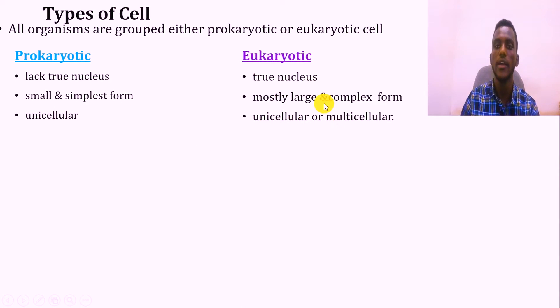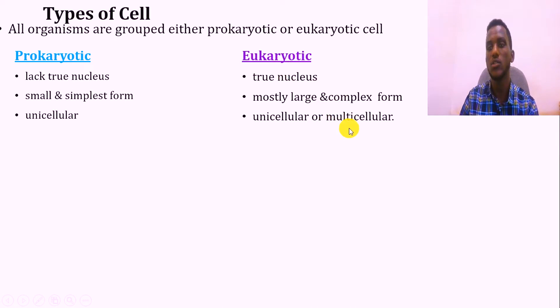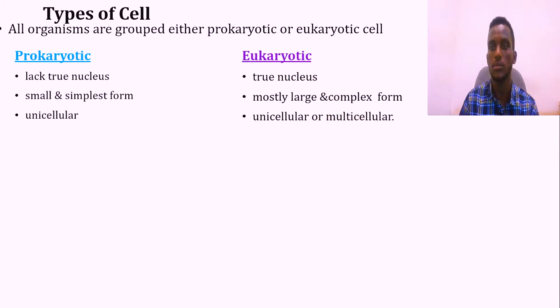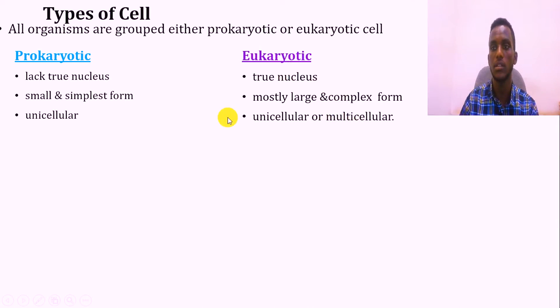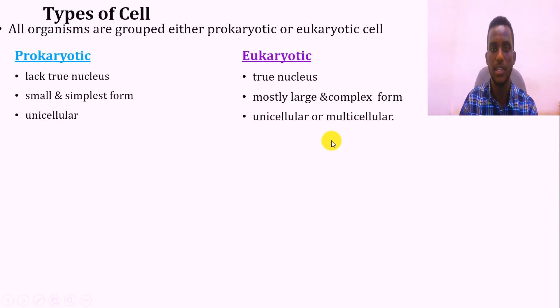Eukaryotic cells are also multicellular. Plants, animals, fungi - they are multicellular, that is, made from more than one cell.